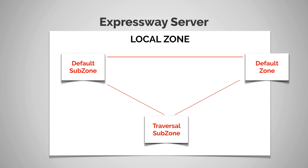When you're doing bandwidth restrictions with sub zones, you need to consider a few things. For the traversal subzone, we know from a previous video that no endpoints can ever register to a traversal subzone. This means that when you go into the bandwidth restrictions for the traversal subzone, you're only going to see total and per call bandwidth restrictions.